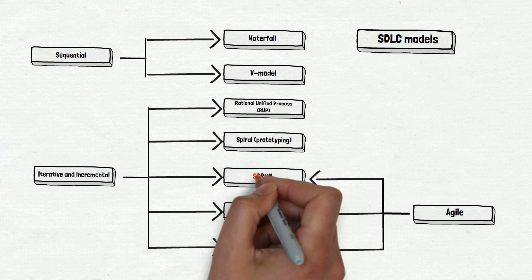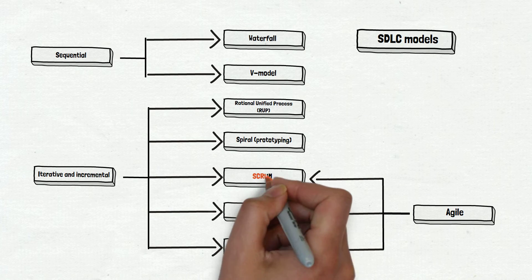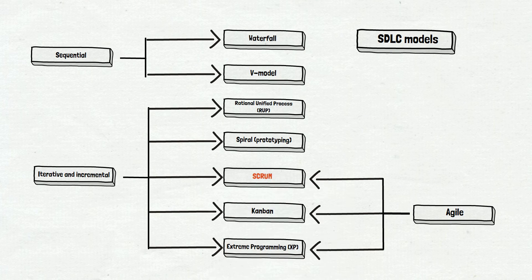Scrum is an agile, iterative and incremental software development model. Most resources call Scrum a framework, but in the scope of our answer, it is not critical.